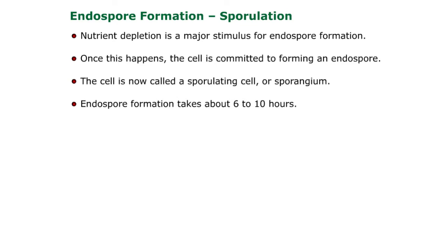Nutrient depletion is a major stimulus for endospore formation. Once this happens, the cell is committed to forming an endospore. The cell is now called a sporulating cell or sporangium. Endospore formation takes about six to ten hours.